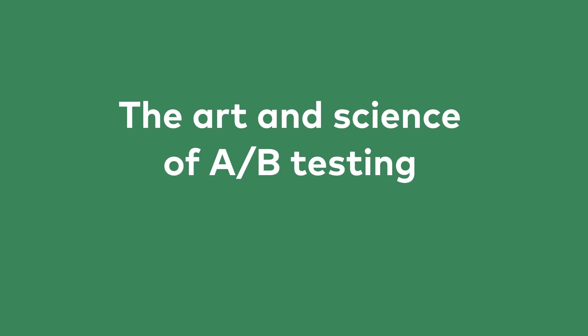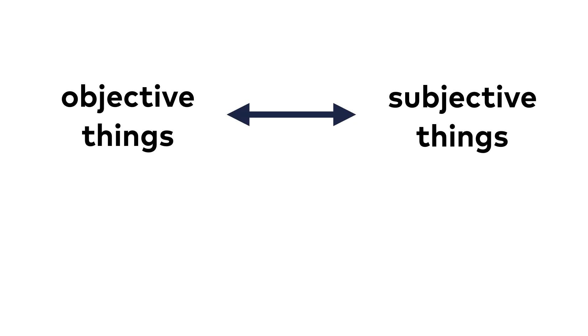There is an interesting paradox in A-B testing, and the more years I spend in the field, the more clearly I see this. The paradox is this: experiments help you make decisions more objectively, but there are so many elements in them that will always be very subjective.